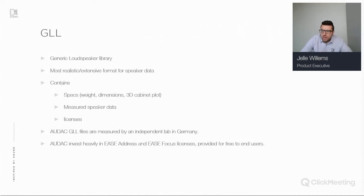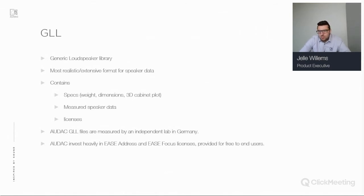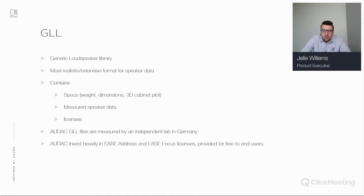The GLL — Generic Loudspeaker Library — is the most realistic and extensive format for loudspeaker data. It contains all the specifications of the loudspeaker, like weight, dimensions, and 3D cabinet plot. It also includes all the measured speaker data and can include licenses for EASE Address and EASE Focus.